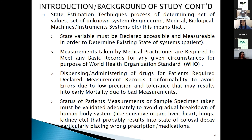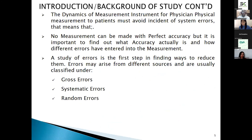The status of patient measurement or sample specimens must be validated adequately to avoid gradual breaking down of human body systems and sensitive organs like the liver, heart, lungs, and kidney, which could result in colossal decay, particularly from wrong prescriptions or medications. Dynamic measurement instruments for physicians include the sphygmomanometer and thermometer, and many others. Patient measurements must avoid incident or system errors that may result in colossal decay. No measurement can be made with perfect accuracy, but accuracy must be ensured as the main goal to avoid bad measurement introduction.